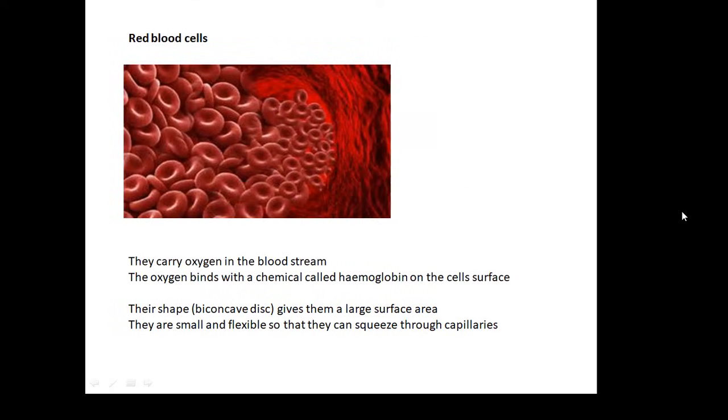Red blood cells. And their function is to carry oxygen in the bloodstream. The oxygen binds with a chemical called hemoglobin, which is the red stuff. And when the oxygen binds to it, it becomes oxyhemoglobin. It becomes bright red. So on the surface of the cell, the hemoglobin carries the oxygen.